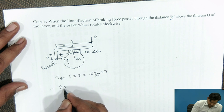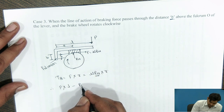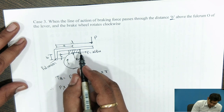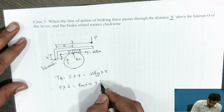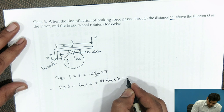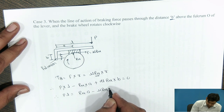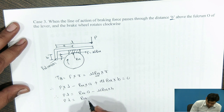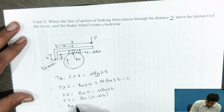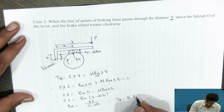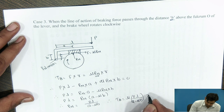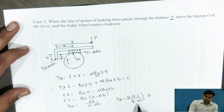Taking moments about the fulcrum: P·L − Rn·A + μRn·B = 0. Therefore, P·L = Rn·A − μRn·B = Rn(A − μB). So P = Rn(A − μB) / L. Therefore, the braking torque TB = μRn · PL / (A − μB) · R. Here again we observe the term A − μB, so the two cases of self-locking and self-energized brake apply here as well.